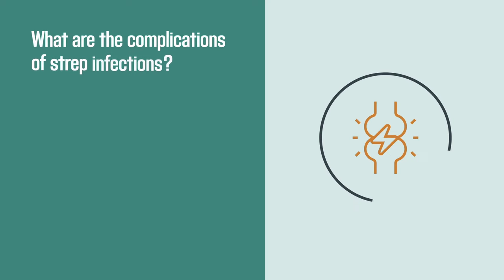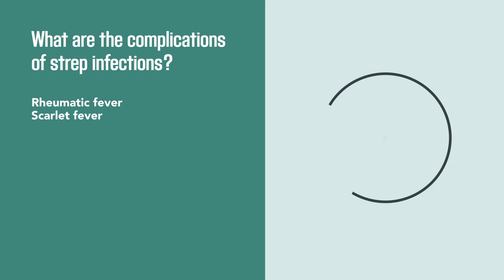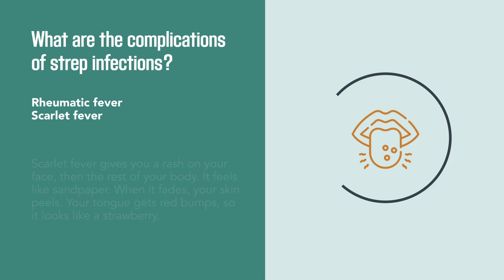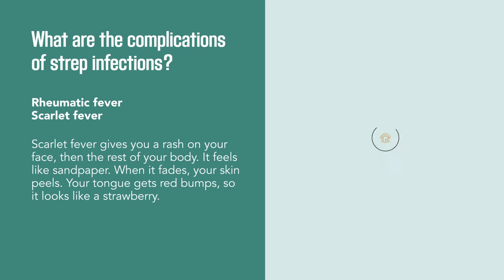What are the complications of strep infections? Rheumatic fever gives you painful, swollen joints. Children may experience uncontrollable, jerky movements of their arms and legs. Scarlet fever gives you a rash on your face and body that feels like sandpaper. When it fades, your skin peels. Your tongue gets red bumps so it looks like a strawberry.